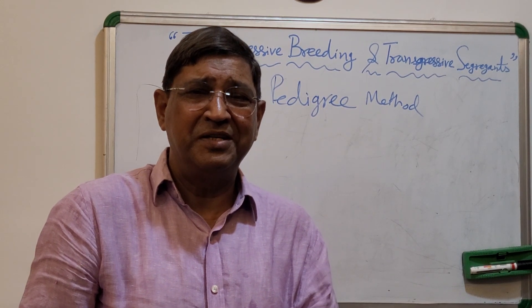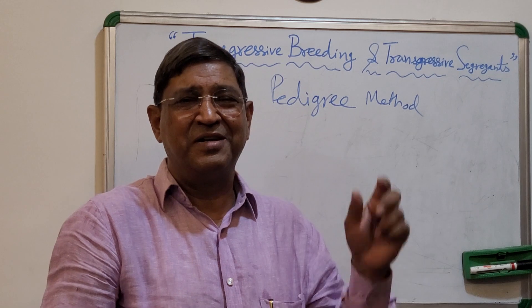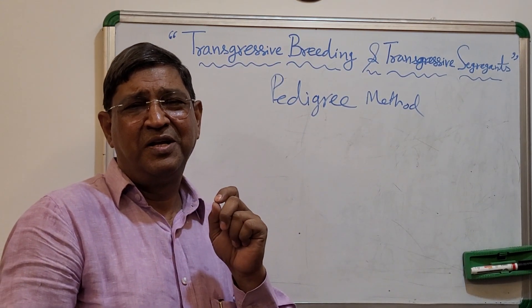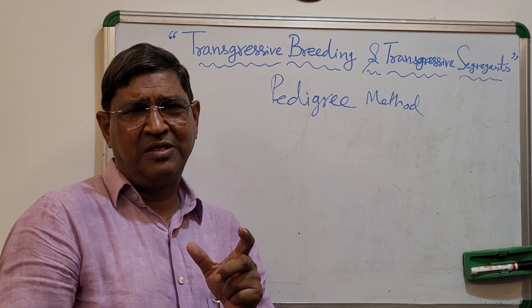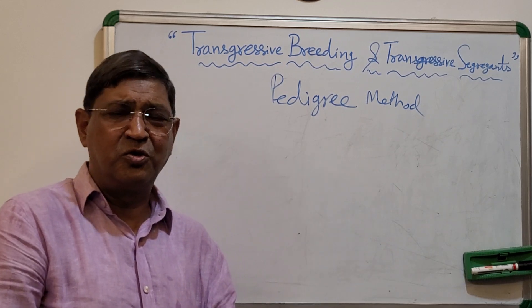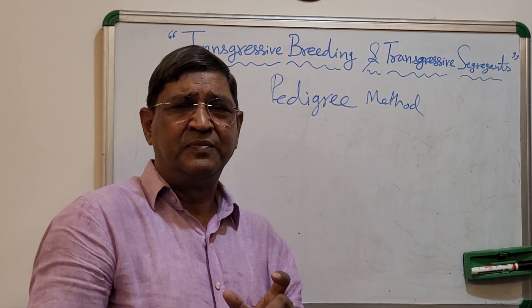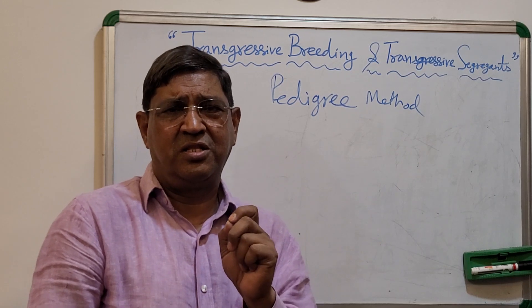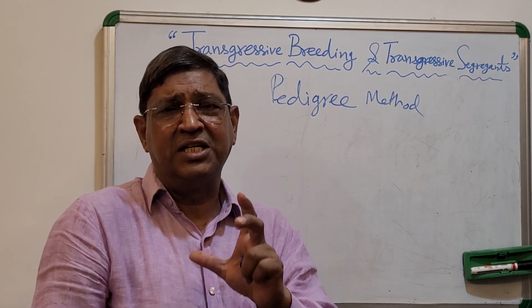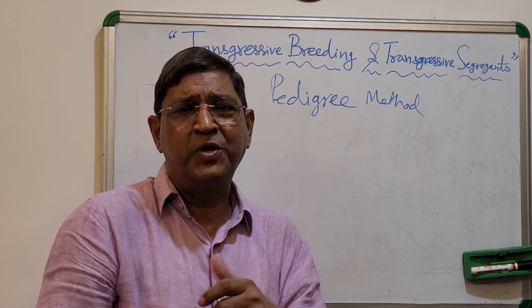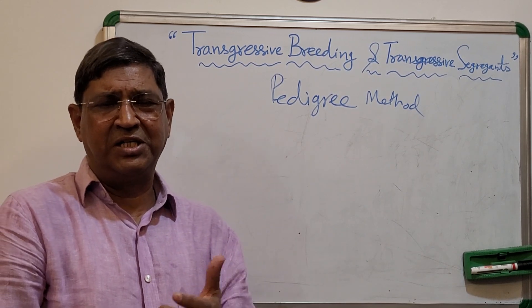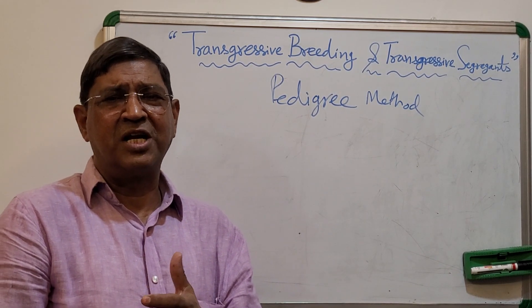Without knowing transgressive segregants, you cannot understand transgressive breeding, because many times you confuse transgressive segregants with heterosis. Please don't confuse them. Transgressive segregants are the individuals found in the segregating generation which are superior to both the parents in one or many traits. They are called transgressive segregants.